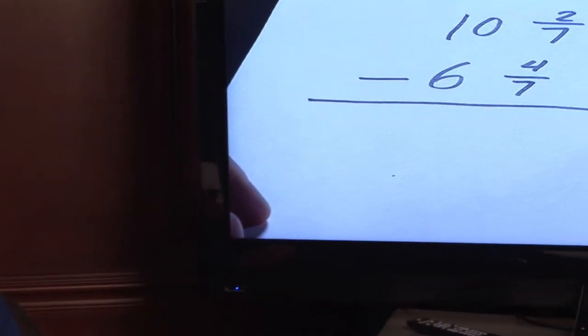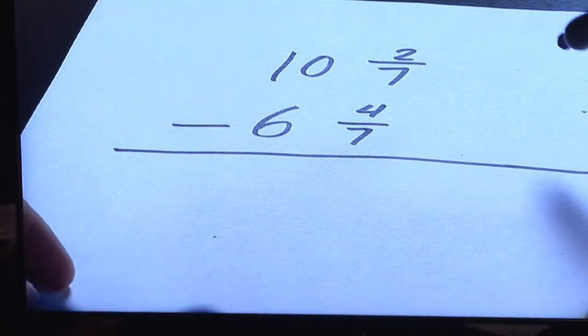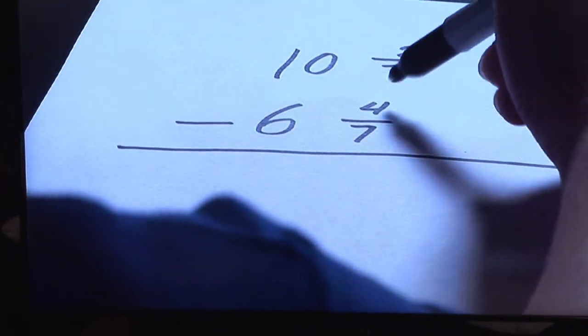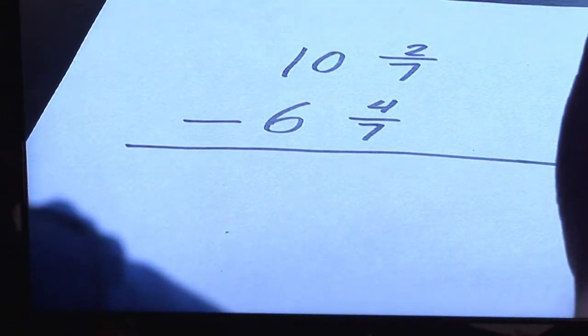You have ten and two sevenths minus six and four sevenths. You don't want to do the ten minus six first even though you read left to right. You have to deal with the fractions first, the two sevenths and the four sevenths.